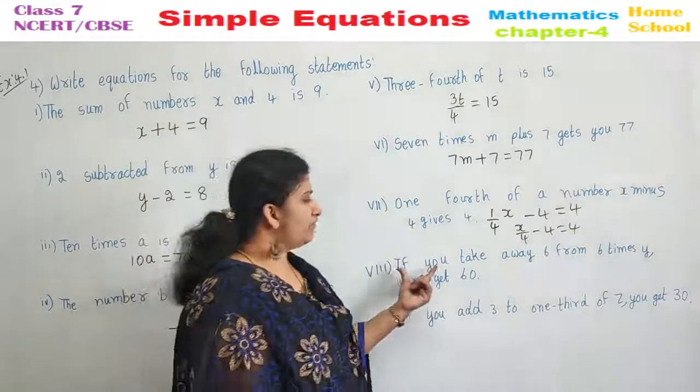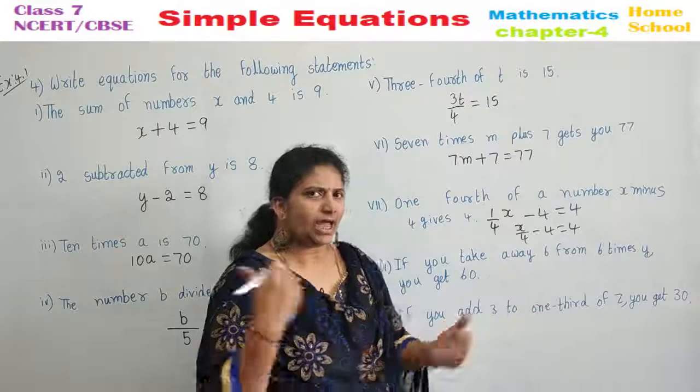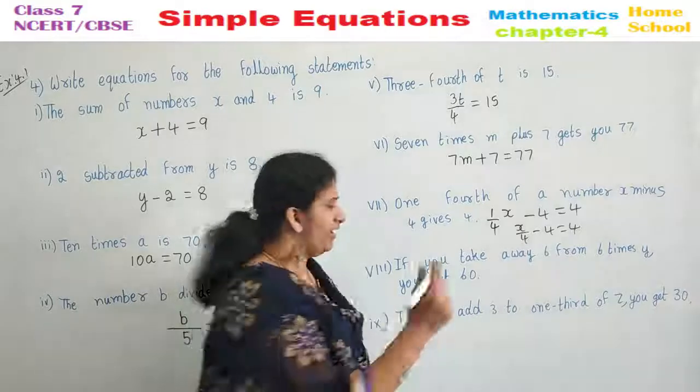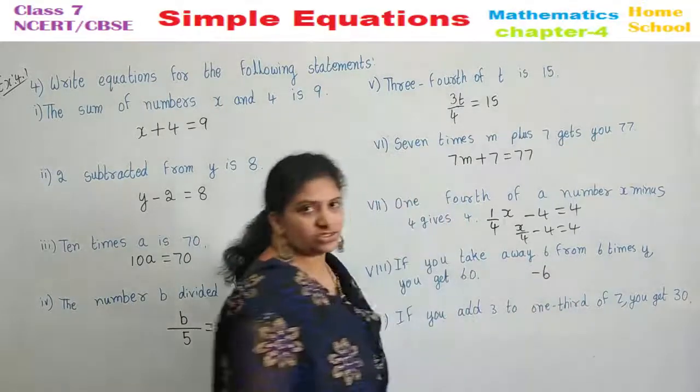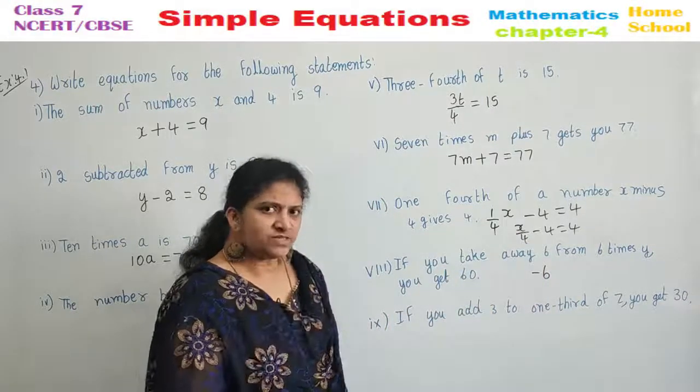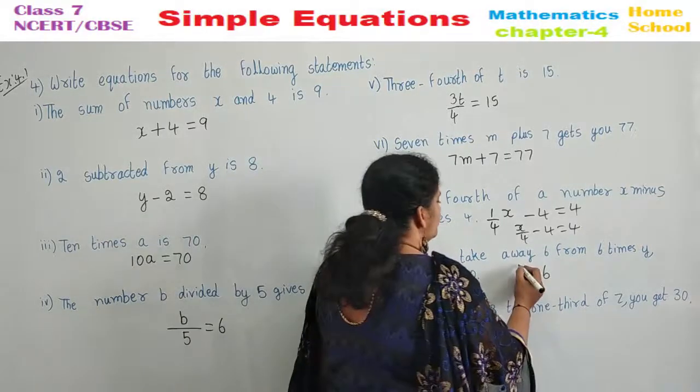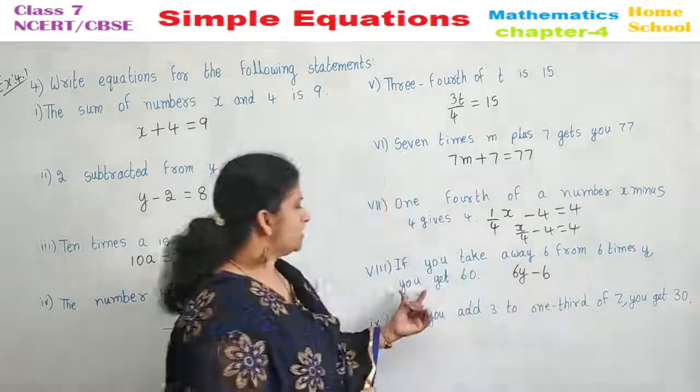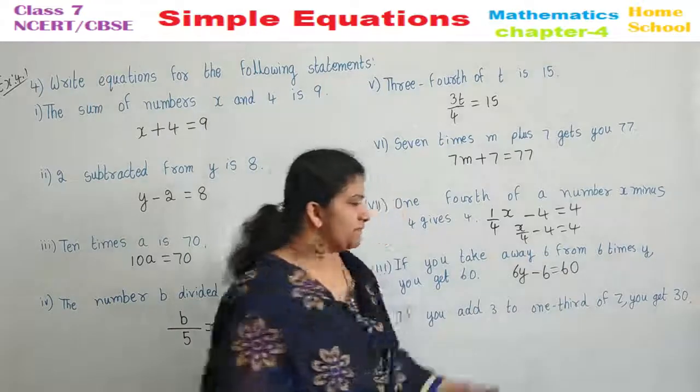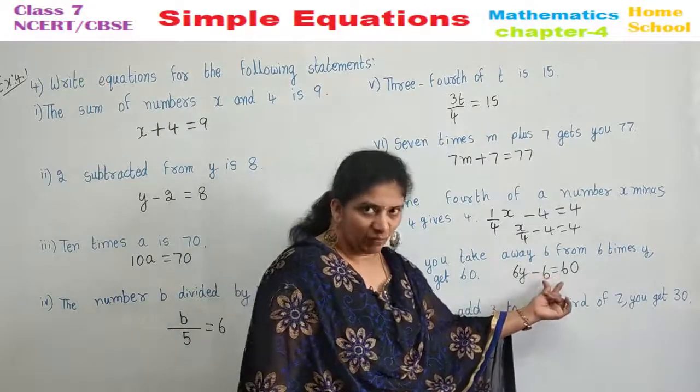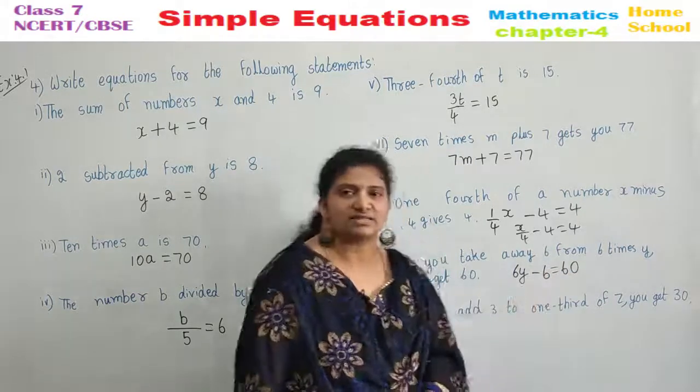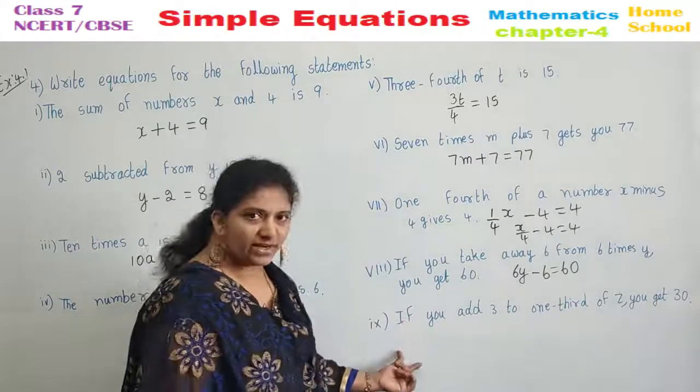8th one. If you take away. Take away is subtraction. If you take away 6. How much you need to take away? 6 is to be taken away. Minus 6 you write first. From what? From 6 times Y. 6 times means 6 into Y. 6Y minus 6 you get 60. You get means equal to 60. 6 is taken away from 6 times Y you get 60. That is 6Y minus 6 is equal to 60.